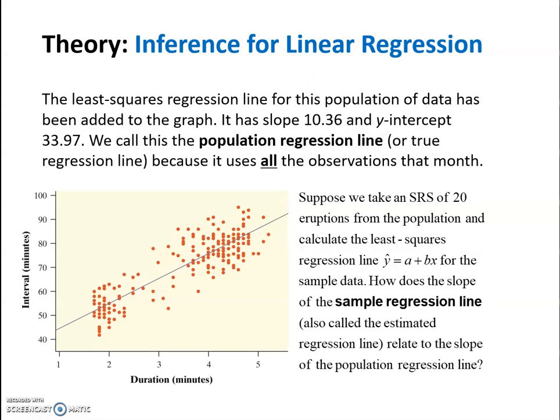So let's get into a little bit of theory here. The least squares regression line for this population of data has been added to the graph. It has a slope of 10.36 and a y-intercept of 33.97. This is going to be called a population regression line, or it can be called a true regression line because it uses all of the observations that month.